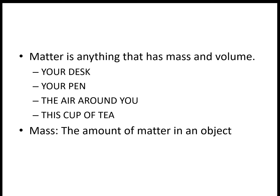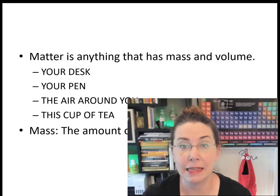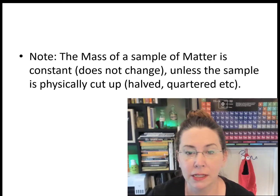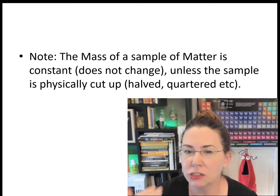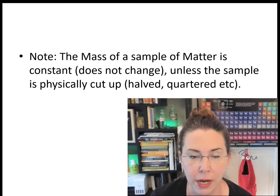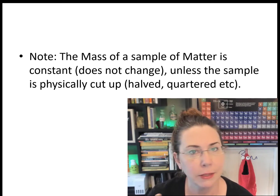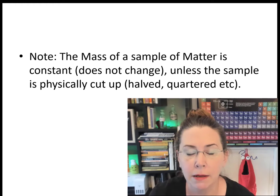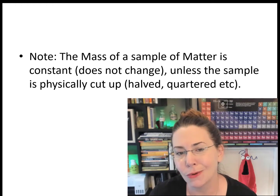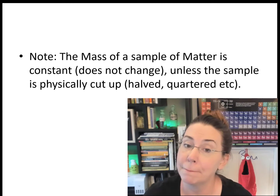Mass is the amount of matter in an object — how much matter is in that thing. The mass of a sample of matter is constant. It's not going to change unless we physically alter that matter in some way: we cut it up, halve it, quarter it, grind part of it away, pour some of it off. That matter isn't going to change its mass.